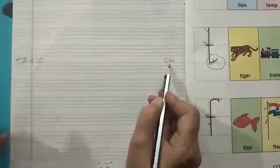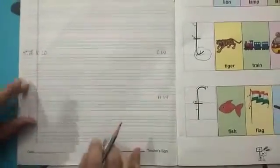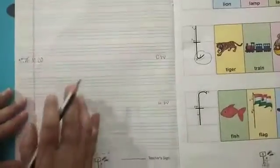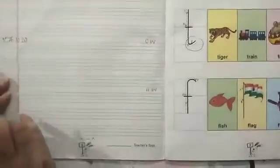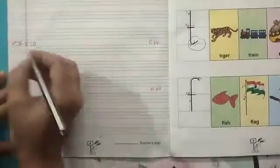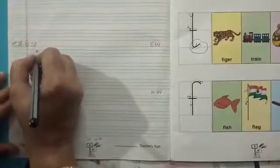Aaj class work mein hum three lines karenge aur homework mein bhi hum three lines karenge. So let's start — kya karna hai humne: I and J. So let's start — how to make I and J.